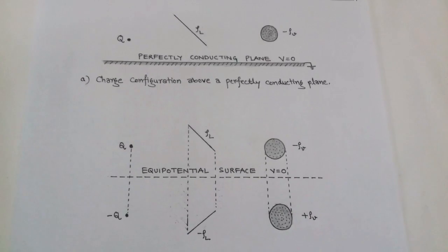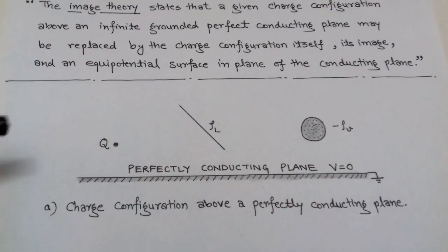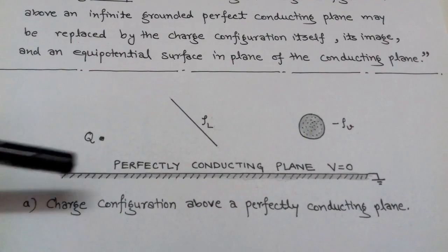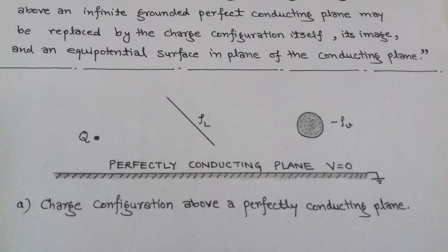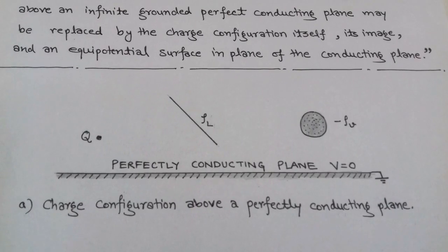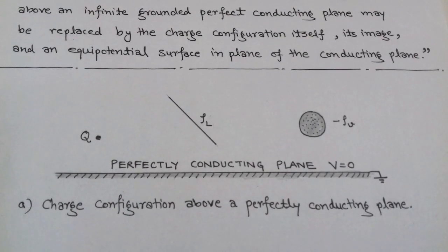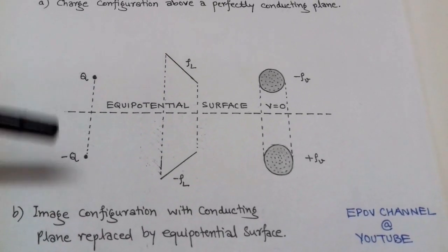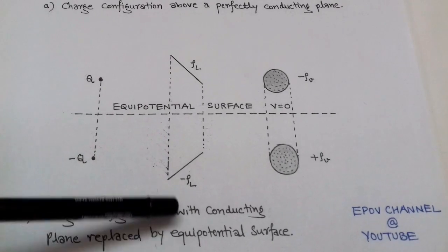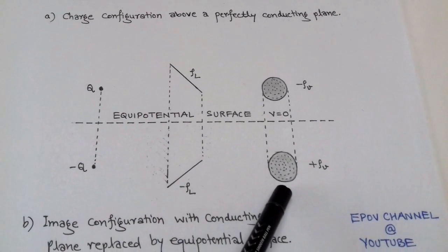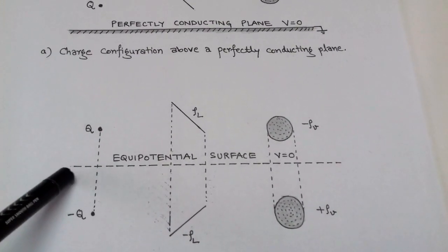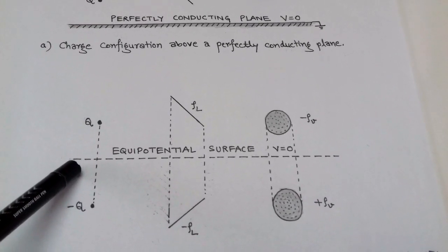We consider charge configurations in the form of a point charge, line charge density, and volume charge density that are above a perfect conducting plane having potential 0 — meaning it is grounded. By using the method of images, each charge configuration has an image: point charge q has image −q, rho_l has image −rho_l, and −rho_v has image +rho_v.